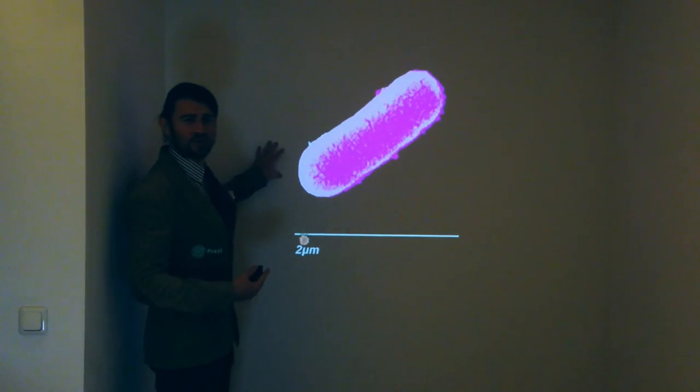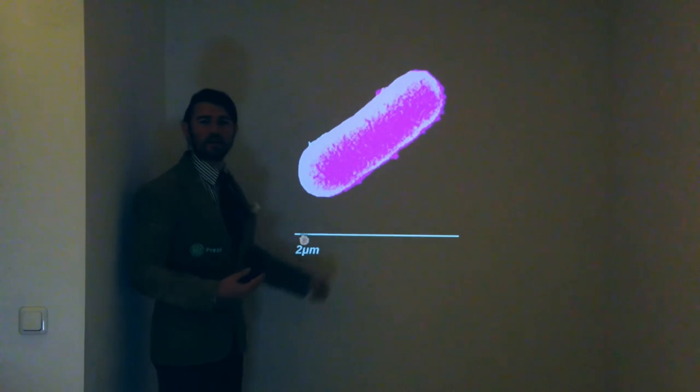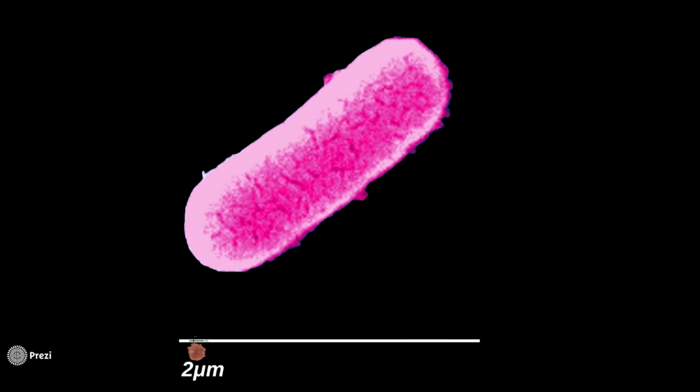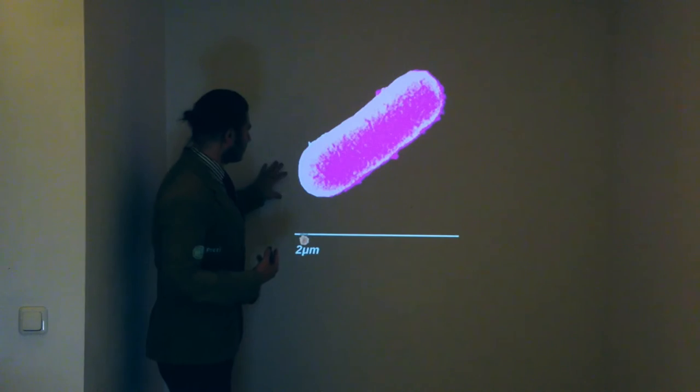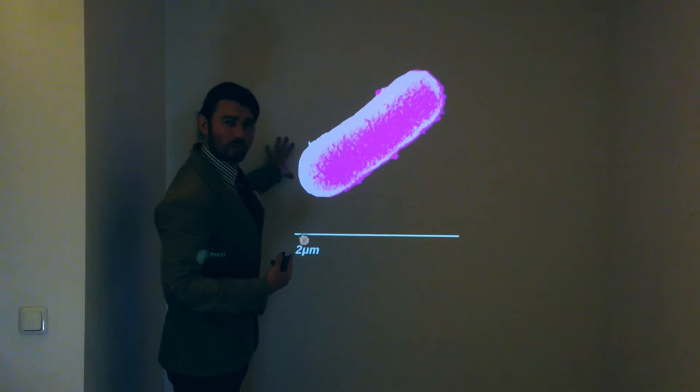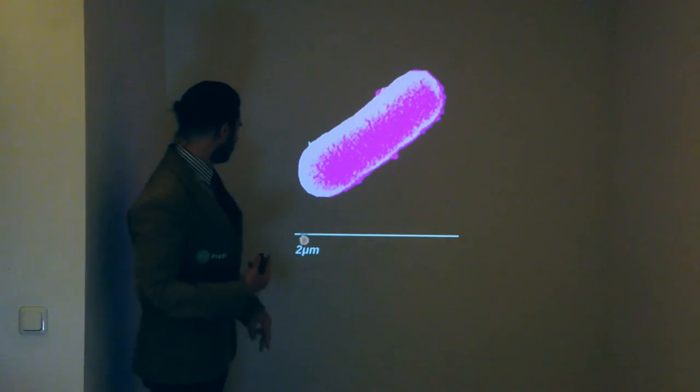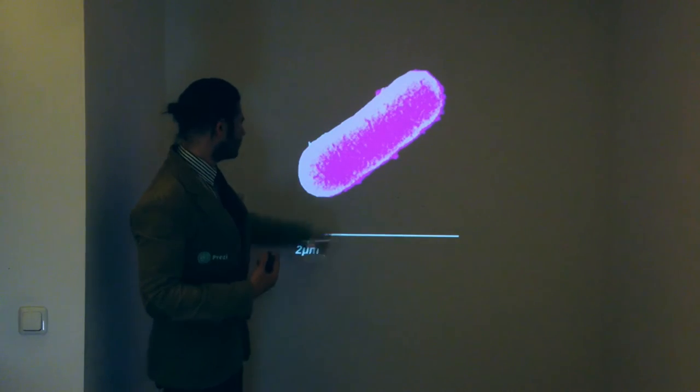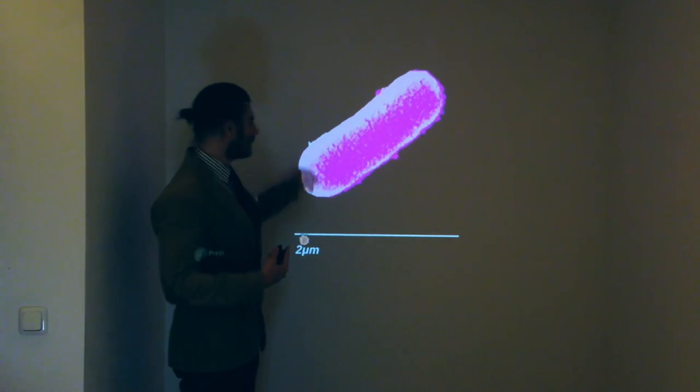However, this is not the good type of E. coli that helps you. This is the bad kind that gives you food poisoning. It is the O157H7. This is courtesy of the CDC. I'd like to give them a shout out for having such wonderful research and images available online. This particular E. coli is around 2 micrometers in length.